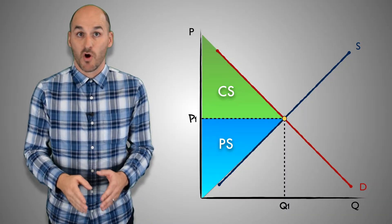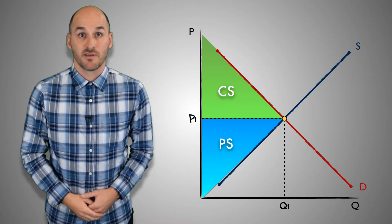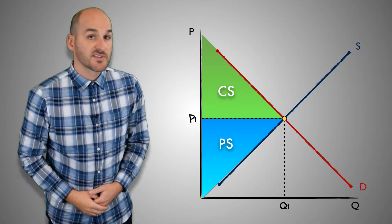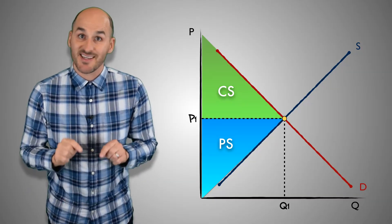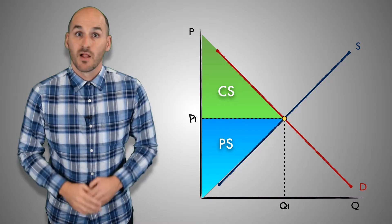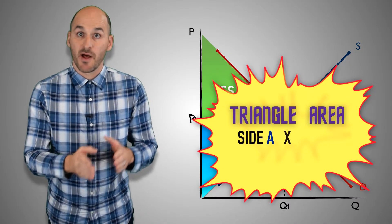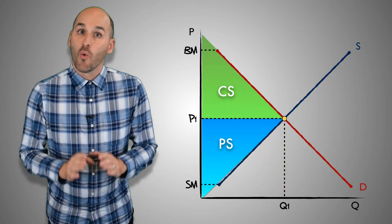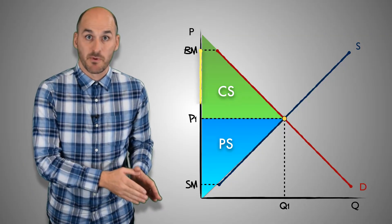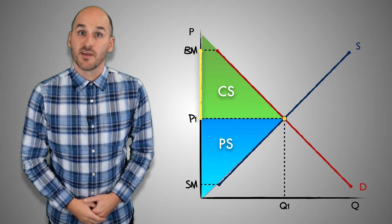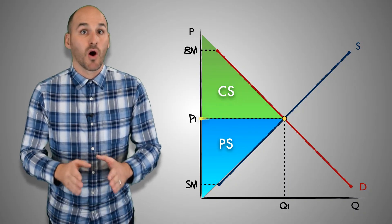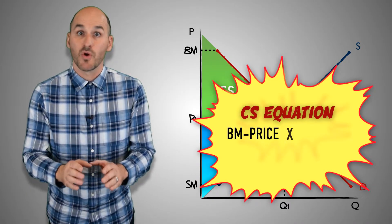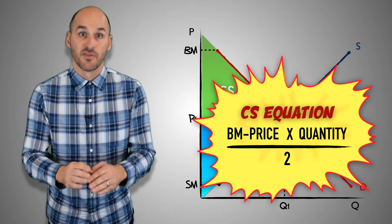Calculating the consumer and producer surplus in a market is easier than it seems. In fact, it's all geometric. Calculating the area of these triangular areas will give us the sum of consumer and producer surplus in this market. Like any other triangular area, we can simply multiply one side by the other side and divide by 2. In the case of consumer surplus, one side can be found by taking the difference between the buyer's maximum price and the equilibrium price in the market. The other side is equal to the quantity of output sold in the market. Take these two sides, multiply them, and then divide by 2, and you'll find the total sum of consumer surplus in the market.